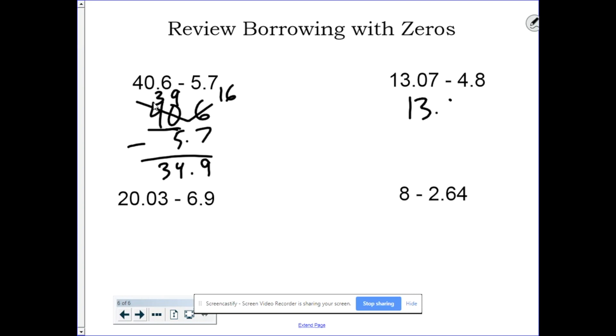All right, let's take a look at this one. 13.07 minus 4.8. Before I get started, I'm sure you're saying, fill in that gap. 7 minus 0 is 7. Uh-oh, I can't do 0 minus 8, so I borrow from the 3.